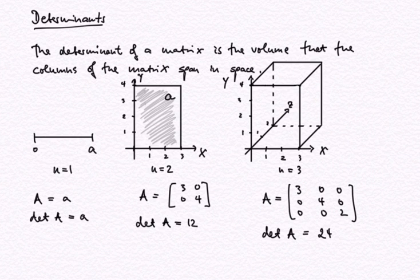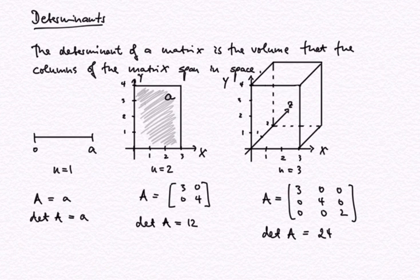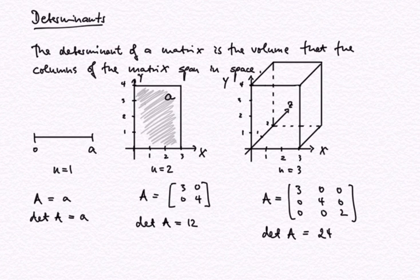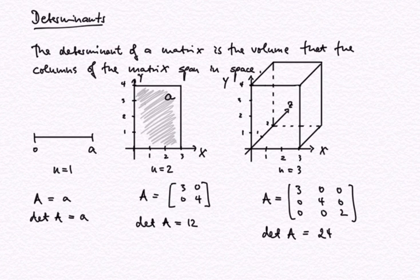If we bring this to a matrix situation, going back to the rightmost picture with the cuboid, we can express the length of the base of this cuboid — three units — as a vector in three-dimensional space with coordinates (3, 0, 0). Writing this into the first column of a matrix, the y-direction as (0, 4, 0), and the z-direction as (0, 0, 2), we get a diagonal matrix, and the volume of the cuboid is clearly given by the product of the diagonal entries: 3 times 4 times 2.